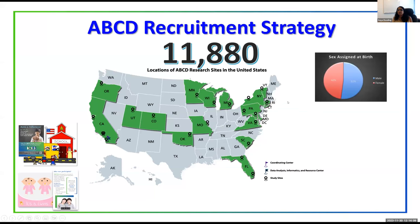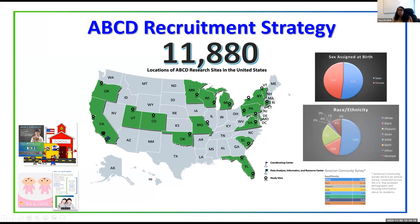In terms of demographics, we have close to 50% boys and girls by sex assigned at birth. Each site had a target for racial and ethnic makeup to reflect national demographics based on the American Community Survey — approximately 50% white, 15% Black, and 20% Hispanic, which is very similar to the American Community Survey figures.